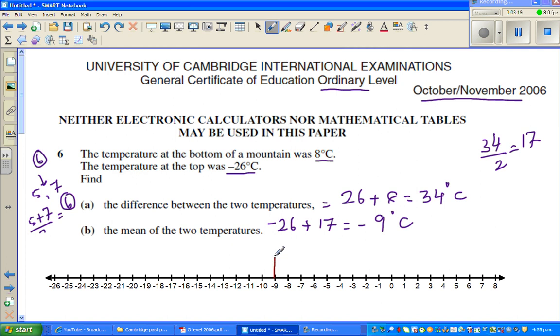So this is your minus 9, and this is your minus 26, and this is your 8. Now this is a difference of 17 degrees centigrade. Can you see that? 0 to 9 is 9, and 9 plus 8 is 17. And from here to here, if you count, this is also 17 degrees centigrade. So the mean between these two is minus 9 degrees centigrade.